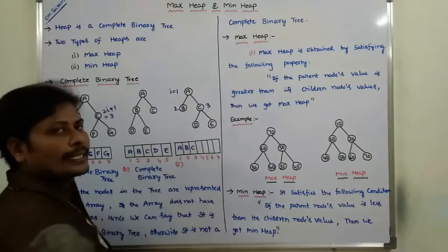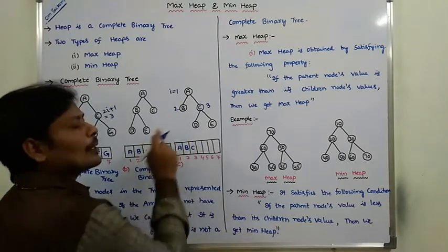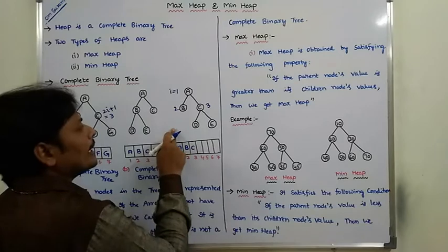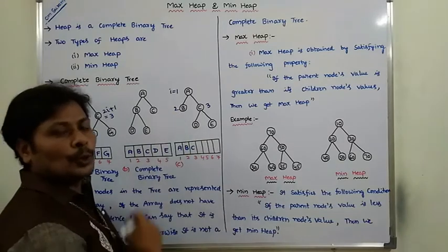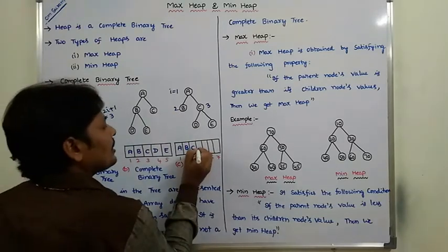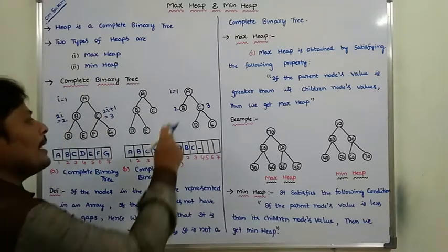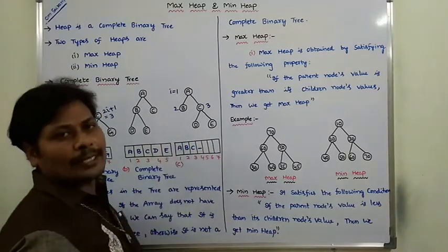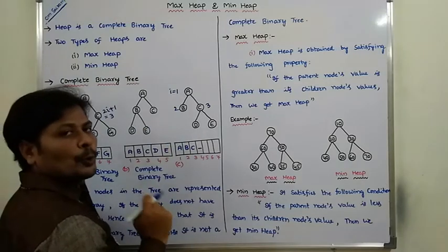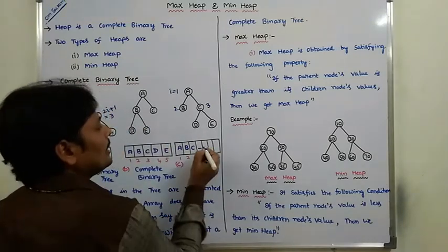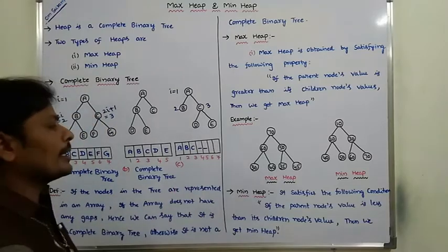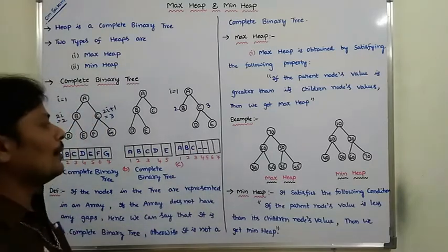B's left child would be at 2i, where i value is 2, so 2 into 2 equals 4 — but it is not located there. B's right child is at 2i plus 1, i value is 2, so 2 into 2 plus 1 equals 5 — it is not there either. Hence we represent those as vacant places.